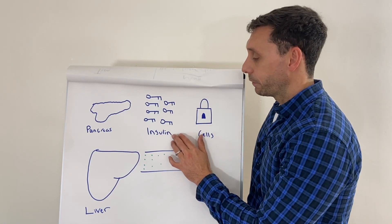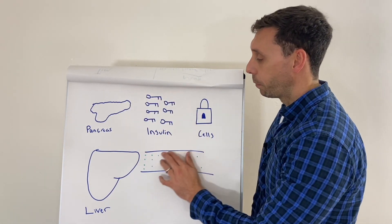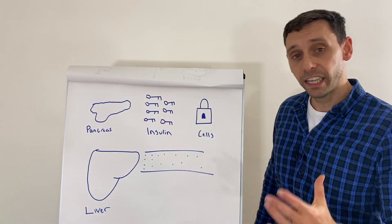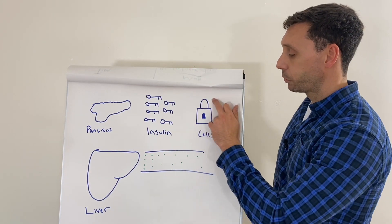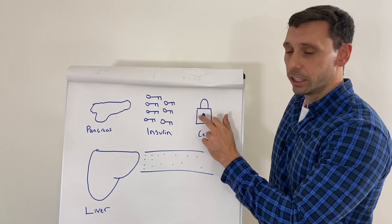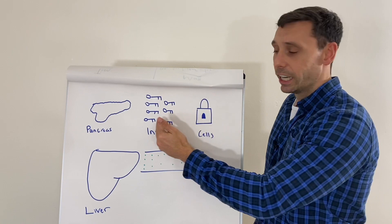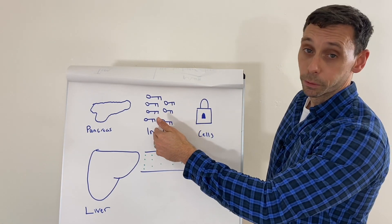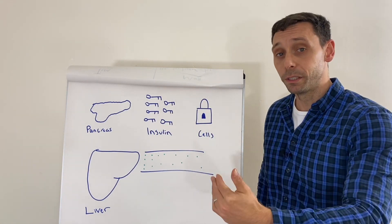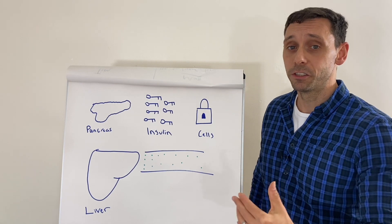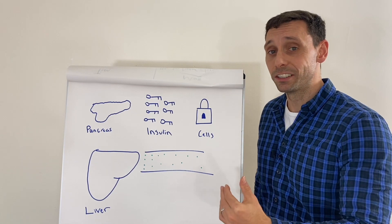So a nice way to think about this is insulin, the hormone, works a little bit like a key and where it's trying to get to is inside the cells which are locked. So insulin works like a key, it opens up the locks, the lock opens, and then the blood glucose is able to go from the blood into the cells where it can be used for energy. And that allows your body to do all the functions that it needs to do day to day.